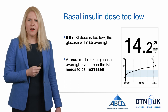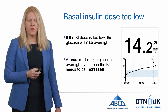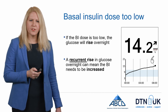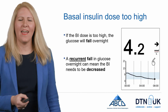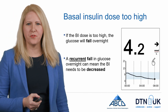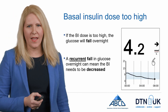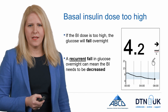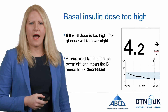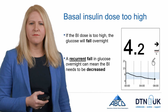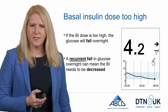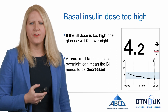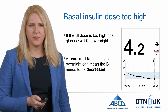If your basal insulin dose is too low, you will see a gradual rise in glucose levels overnight. If you see a recurrent rise overnight on most days, the chances are you need to increase your basal dose to counteract this. If your basal dose is too high, you will see a steady fall in glucose overnight, which would suggest you need to lower your basal insulin dose.